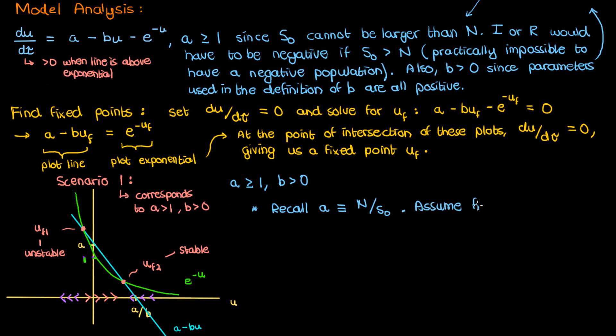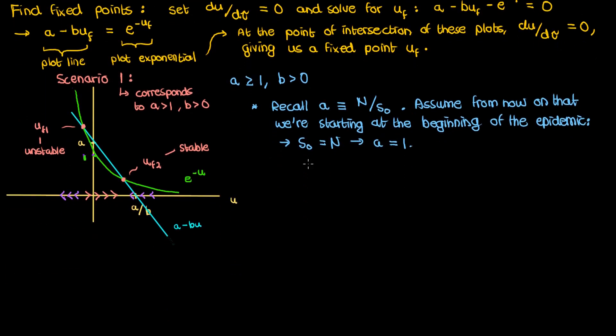If you remember the previous video then you know that a by definition is n over s0. For the remainder of this lesson I'm going to assume that we start simulating our differential equations at the very beginning of the epidemic when s0 is approximately equal to n. Therefore, for the rest of this video I'll assume that a equals 1 and because of this my r, the number of dead people, always starts at 0.